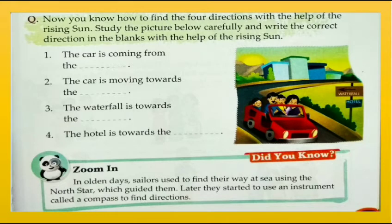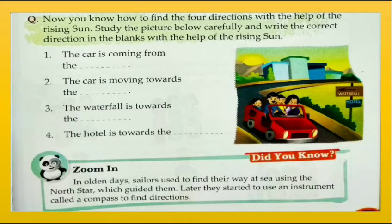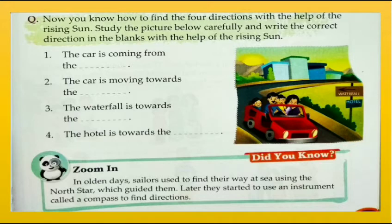Now let's understand directions with the help of this question. Study the picture carefully and write the correct directions in the blanks with the help of the rising sun. Question one: the car is coming from the east — we know this because the sun is rising behind the car. Question two: the car is moving towards the west, because the opposite of east is west.